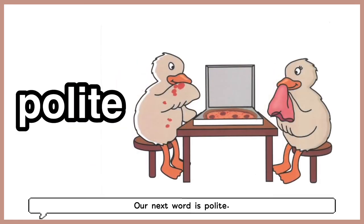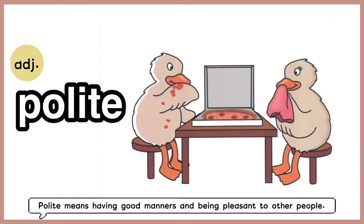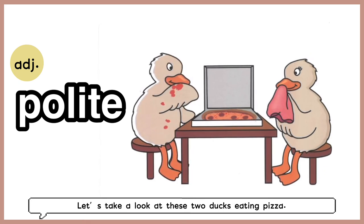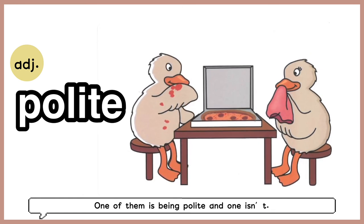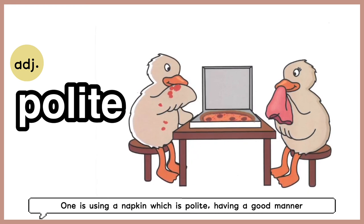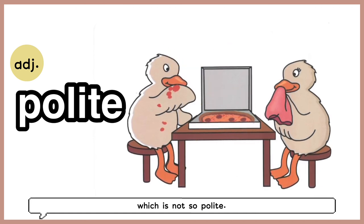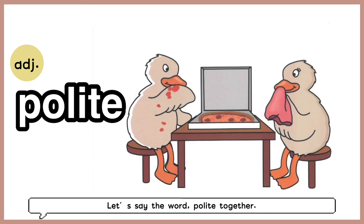Our next word is polite. Polite means having good manners and being pleasant to other people. Let's take a look at these two ducks eating pizza. One of them is being polite and one isn't. One is using a napkin, which is polite — having good manners — and the other one is wiping his face with his wing, which is not so polite. Let's say polite together: polite.